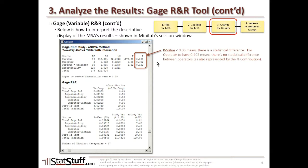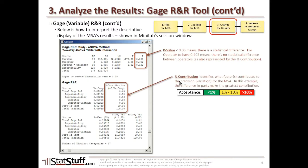We would also see that when we look at the next evaluation, which is the percent contribution. Percent contribution identifies what factors are contributing to any variation or level of precision for the MSA itself. In this particular example, we're looking for the difference to show up in the parts themselves. The scale we use: if it's less than 1%, then that's acceptable.